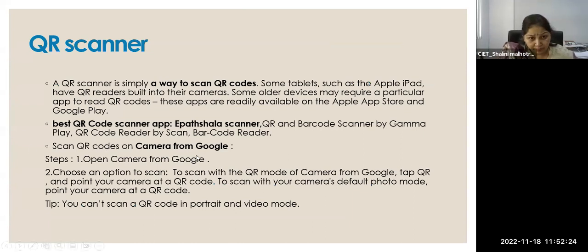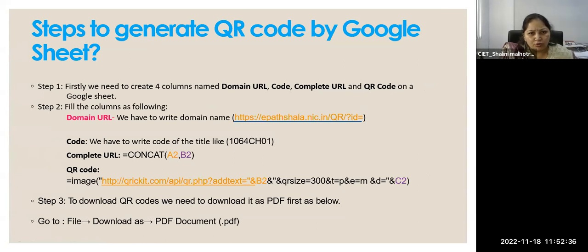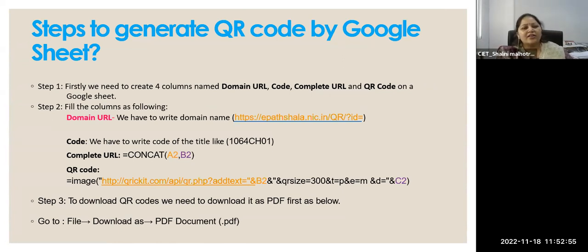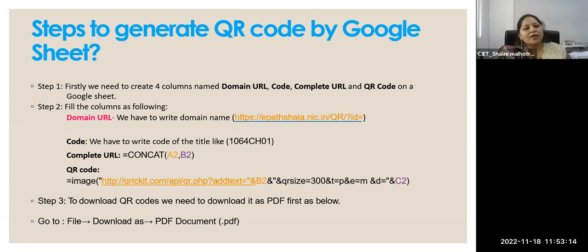There is an ePathshala scanner also — for the books of NCRT, you have an ePathshala scanner. You can scan and use the digital content. You can also scan it from Google Camera. Nowadays Google has given this feature that you can open Google Camera and scan any QR code. Now I'd like to tell you how to generate a QR code for books. If you want to generate a QR code for a single topic, you can do it from Google — it's very simple. Go to Google and type 'how to generate a QR code,' put your URL, click generate, and it will generate a QR code which you can use in your books.